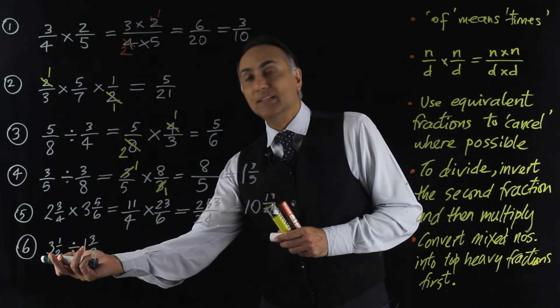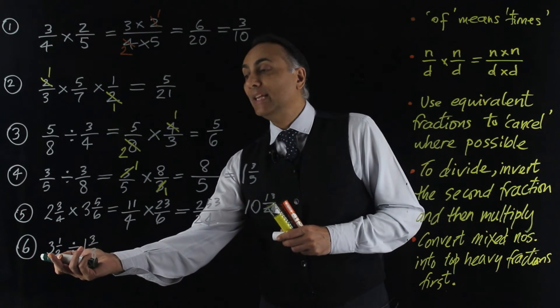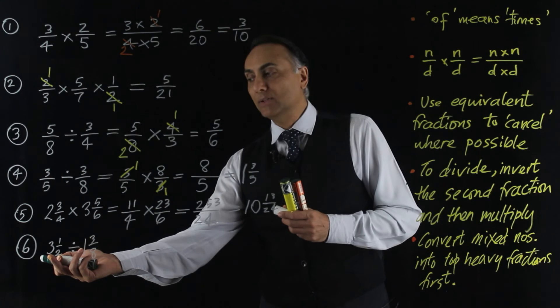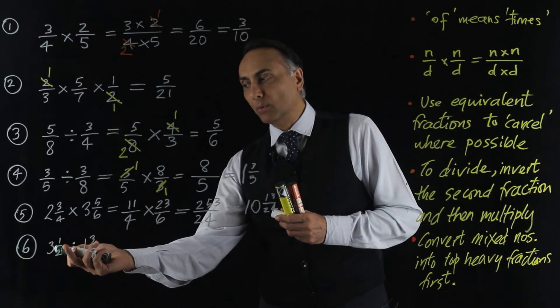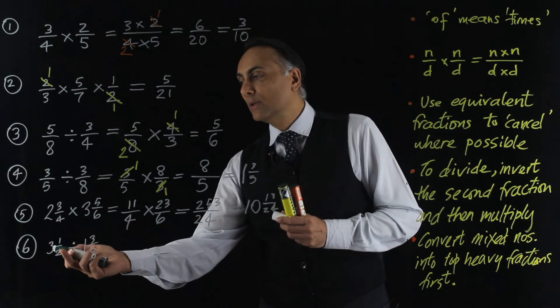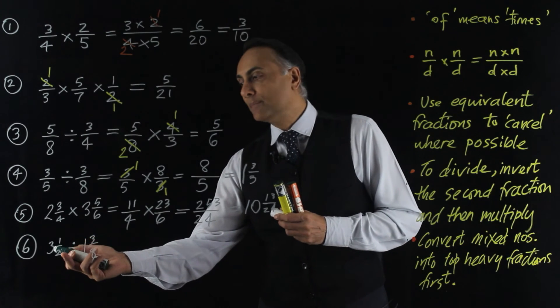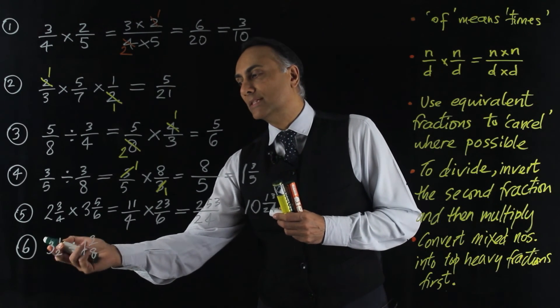Each one is two halves. So three wholes or three ones is going to be six halves. Plus the one half which is seven halves. Or to do it the quick way. Three two's are six and one's seven. So it's seven halves.